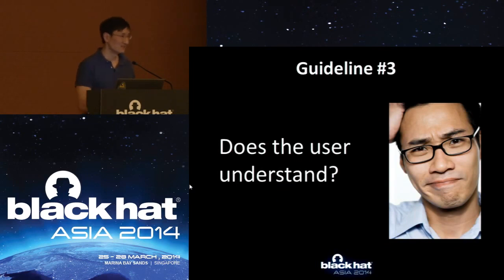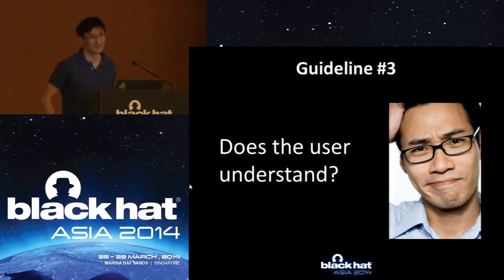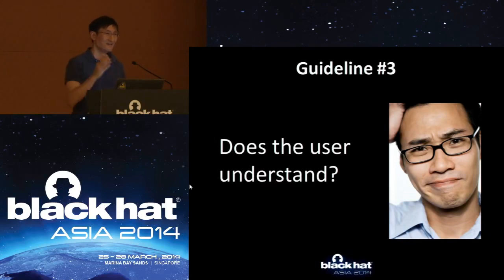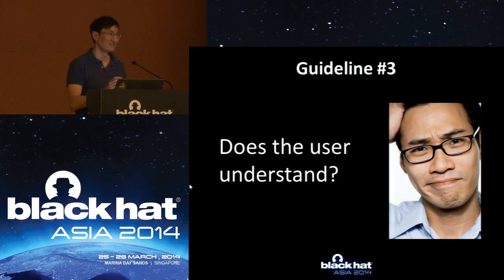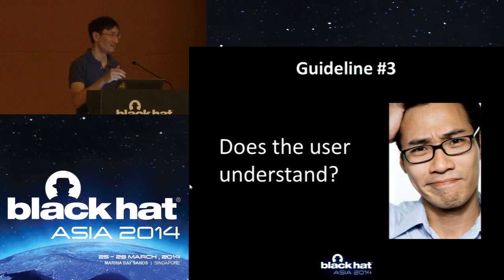Guideline number three is: does the user understand? The word 'transparency' is often heard with respect to privacy. But if a company has transparent policies and the user never looks at them, it doesn't really help — like a window you're not looking through. So the goal is really to make the user understand: what kind of data is being collected, why it's being collected, what the retention policy is. He really has to understand — it's not just that he is able to understand if he does certain things.